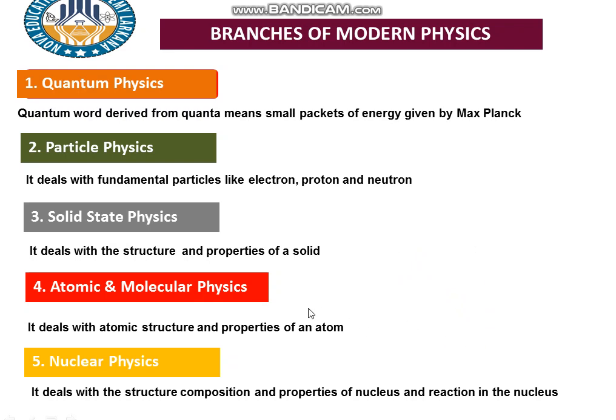Regarding the properties: protons have positive charge, neutrons have no charge, and electrons have negative charge. Many scientists have given theories and models about the atom — starting from Democritus' model, then John Dalton's model, then Rutherford's model, then Niels Bohr's model, then Arnold Sommerfeld's model, and more updated models.